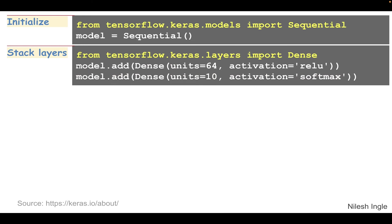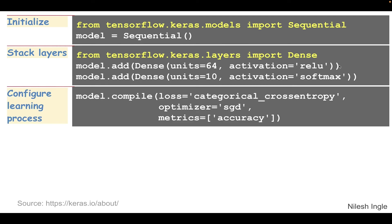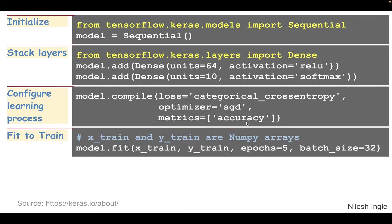Here are the layers of the neural network we are creating: model.add(Dense), where we specify the number of units and the activation function. We add a second layer with 10 units and the softmax activation function. After that, the model is compiled — here we specify the loss function. Remember we talked about why we need a loss function to compare how close or far we are from the true target values. Here we use categorical cross-entropy, the optimizer is SGD, and we can specify accuracy as a metric.